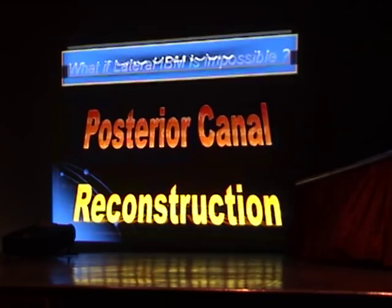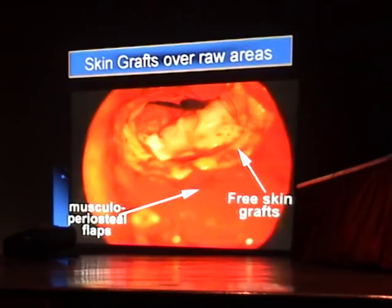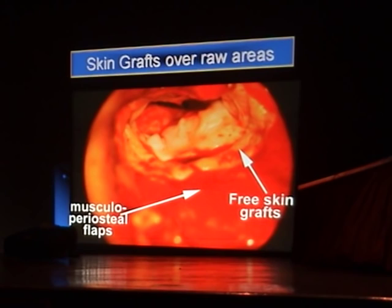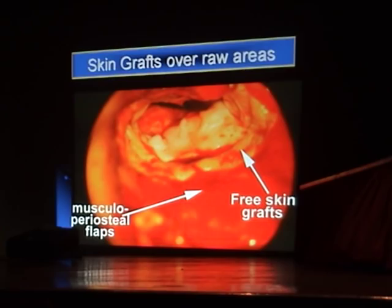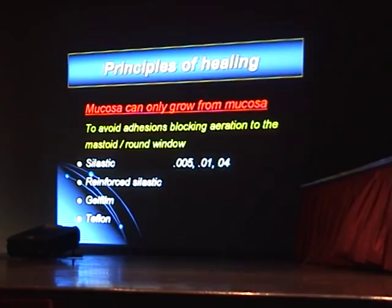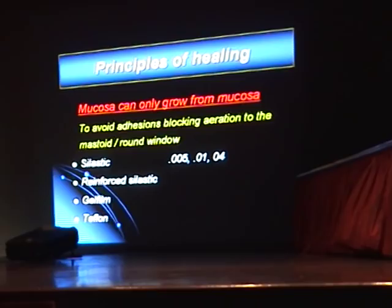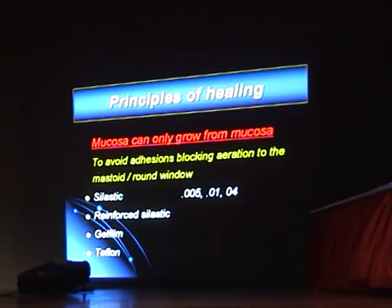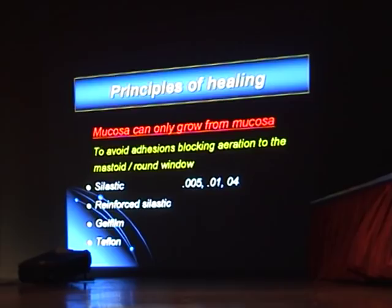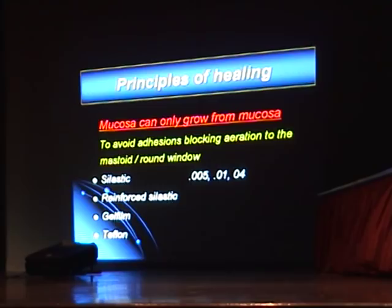If lateral IBM is not possible, posterior reconstruction must be done. Skin grafts should cover all raw areas — here a posterior reconstruction shows all raw areas covered with skin. The second principle is mucosa can only grow from mucosa. Gel film or Teflon is used as a placeholder. Gel film is preferred over silastic because silastic can extrude even after five years if the patient develops sinusitis and blows the nose hard. Gel film is absorbed in 14 days, so nowadays gel film is used almost exclusively.